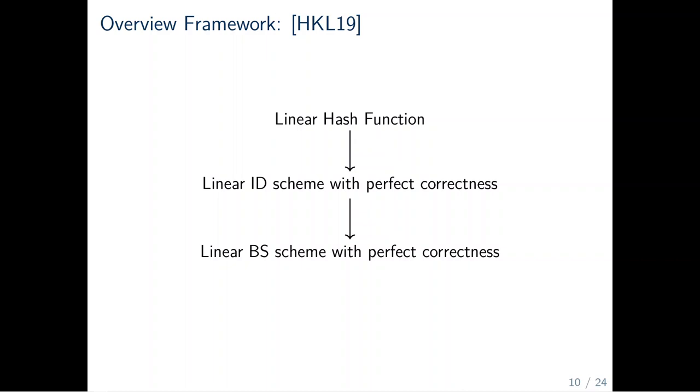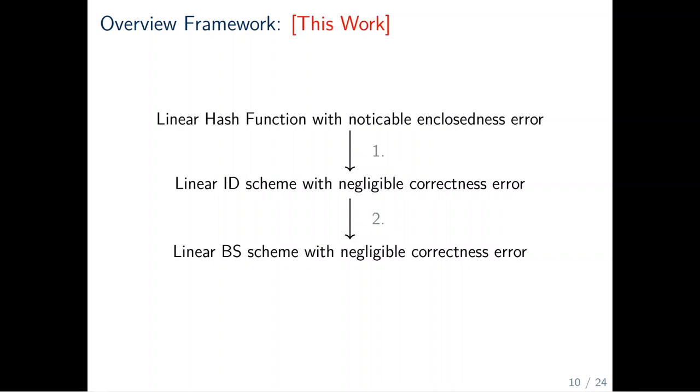The framework of HKL19 defines the two following transformations. From a linear hash function, they construct a linear identification scheme. From that, they construct a linear blind signature scheme. In this work, we start with a linear hash function with noticeable closeness error. Closeness error is a notion closely related to a correctness error. From that, we construct a linear identification scheme with negligible correctness error. Finally, from that, we construct a linear blind signature scheme also with negligible correctness error.